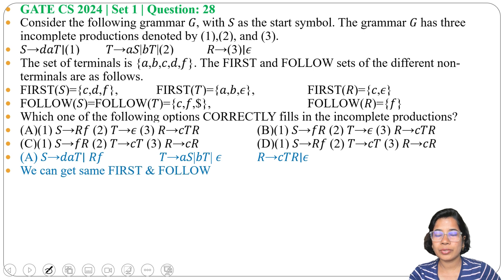You don't need to check all other options. Just for understanding, I am checking option B, option C, and option D. Now option B: in place of 1, put S→FR. In place of 2, write T→Epsilon. In place of 3, write R→CTR. 2 and 3 are same, just one is different.